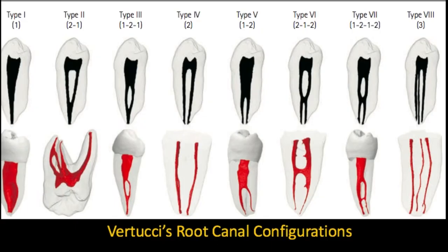Coming to the root canal configuration, there are various types. Among them, two major types of classification: one is given by Vertucci, and the other is given by Weine. These are the two commonly used classifications to identify your root canal system.